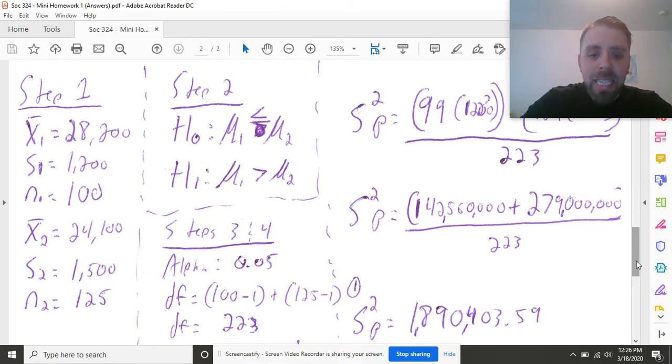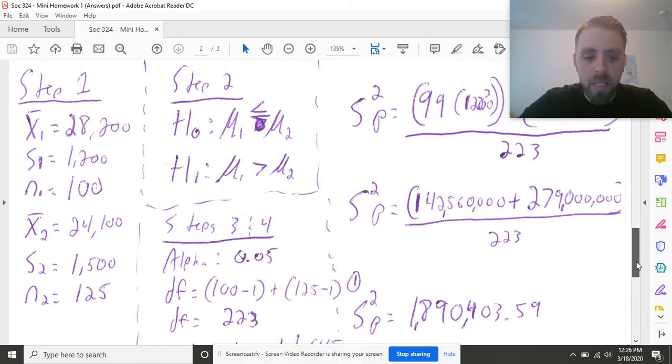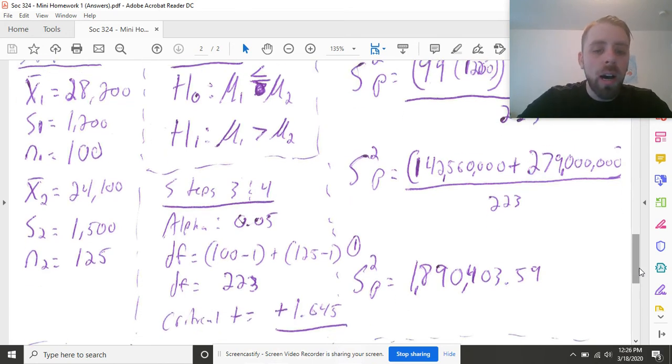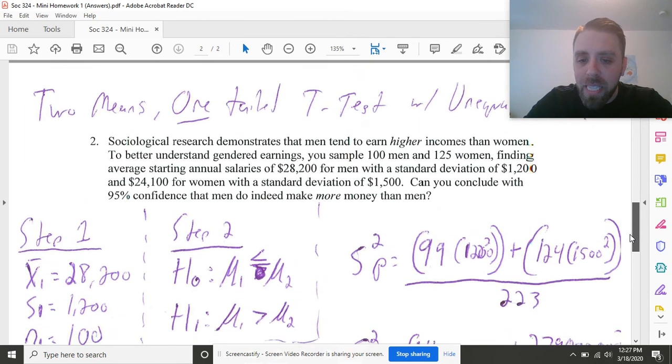I'm going to do this at 95% confidence. Therefore, my alpha level is 0.05. I now do my degrees of freedom as 100 minus 1 plus 125 minus 1. That's df equals n1 minus 1 plus n2 minus 1. And 100 minus 1 is 99. 125 minus 1 is 124. Add those two things together, and I have a degrees of freedom of 223. Looking that up on the table, that clearly puts me in the infinity section of the T distribution. I'm doing a one-tailed test, and I am doing this with 0.05 alpha, or 95% confidence. You should have gotten a critical T here of positive 1.645. And that is all we need to get to work.